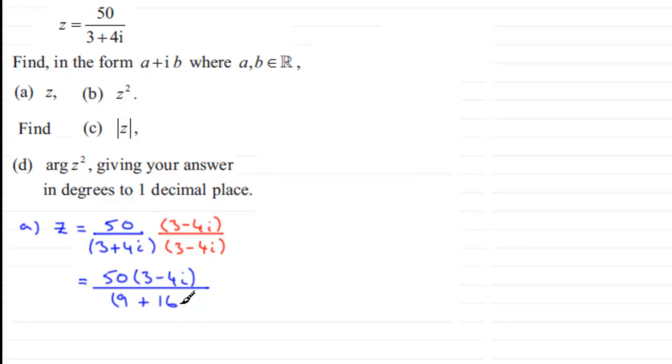Now 9 and 16 is 25 and therefore that cancels into the 50 twice, so what we end up with if we expand it is going to be two lots of 3 minus 4i giving us 6 minus 8i. Ok so there's our simplified version of z.